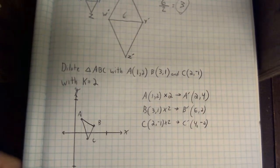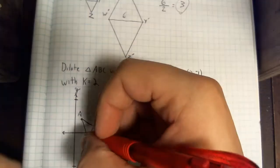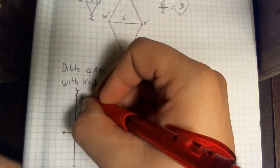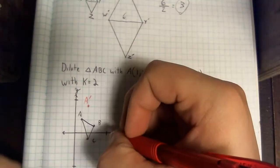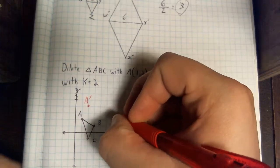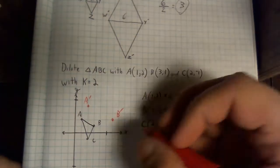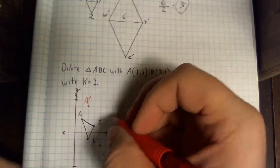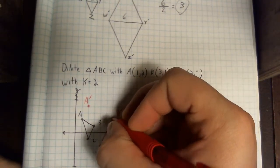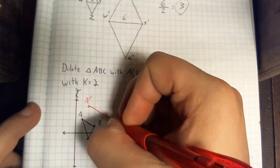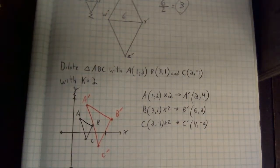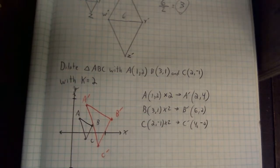So if we check out what we've got, A is going to be at 2, 4, sorry, A prime. B prime is going to be at 6, 2. If I connect all of my points, we notice that our new image is twice the size as our first.